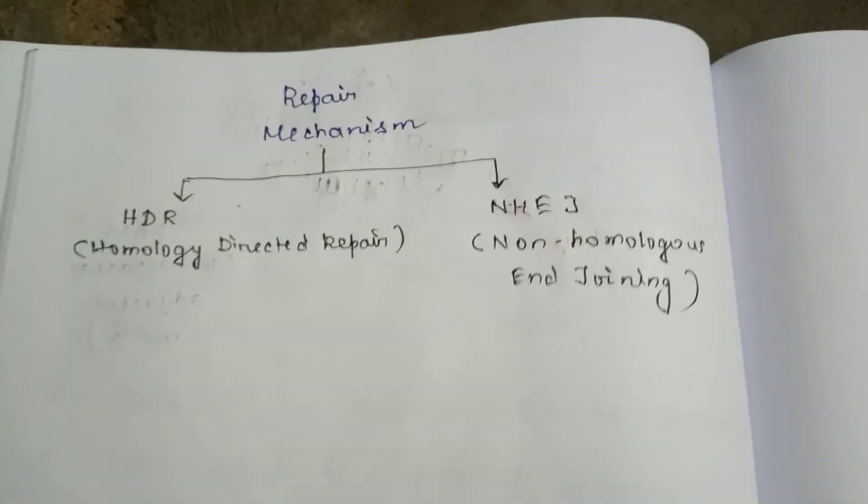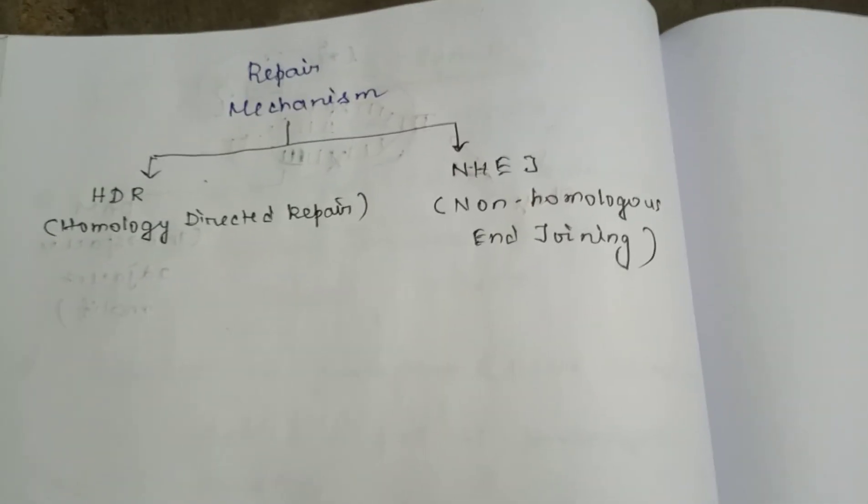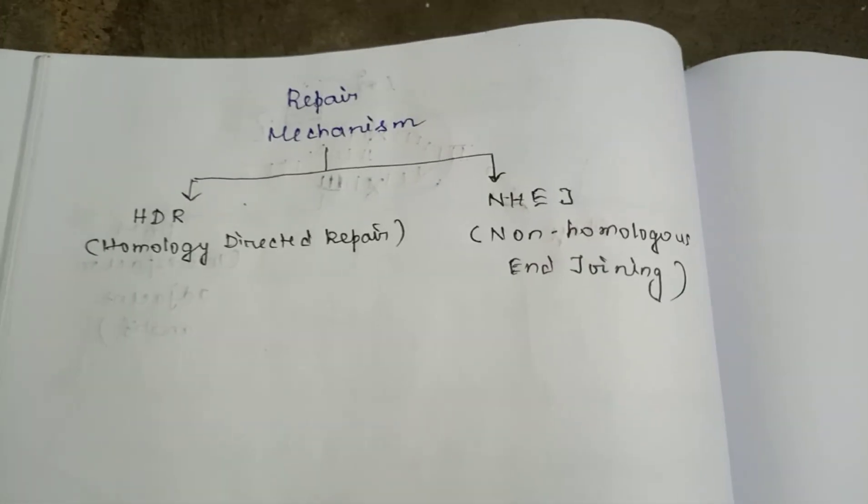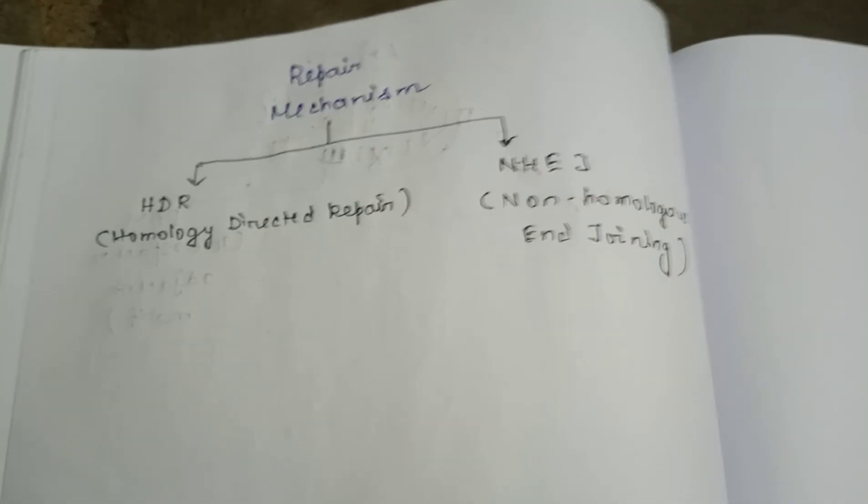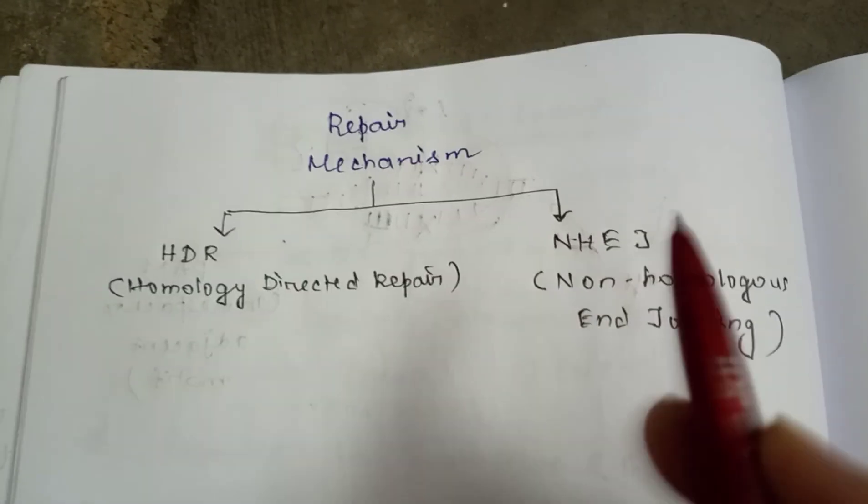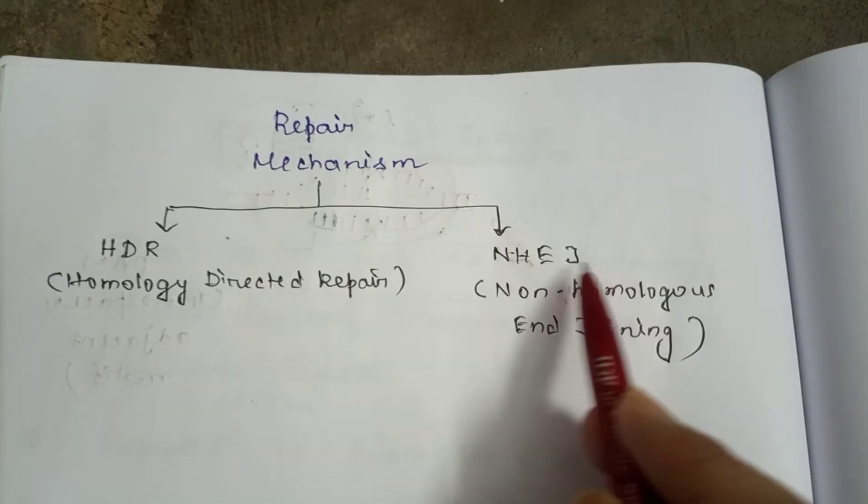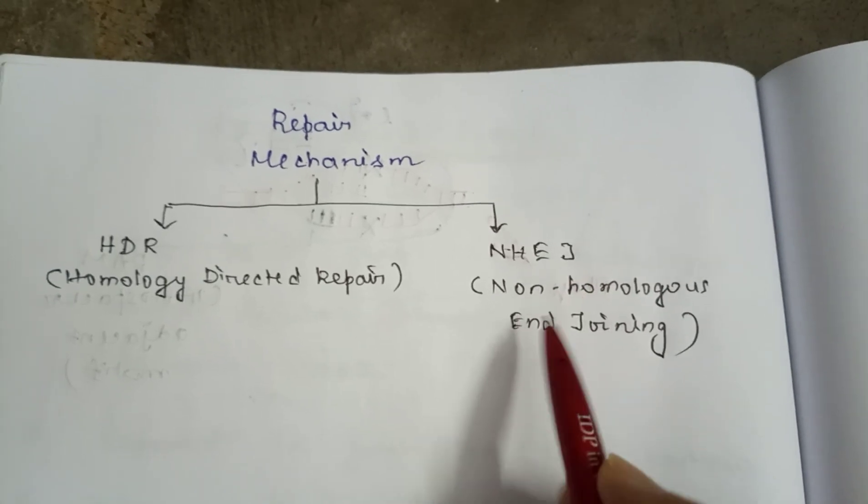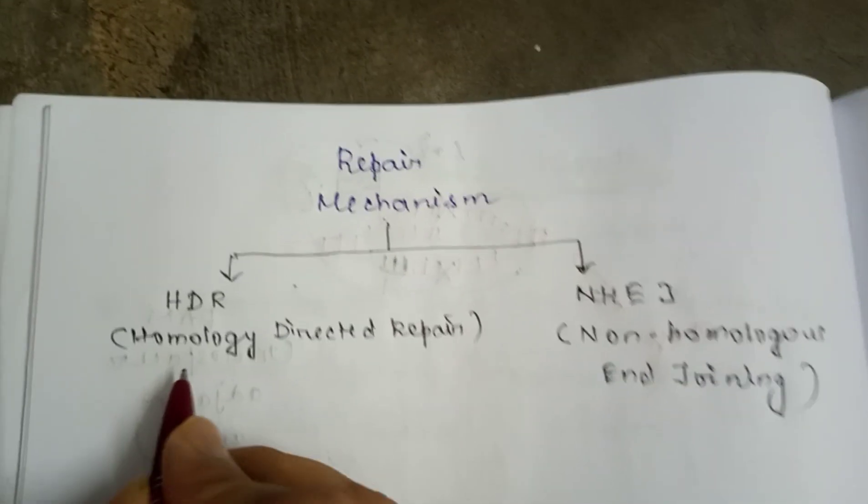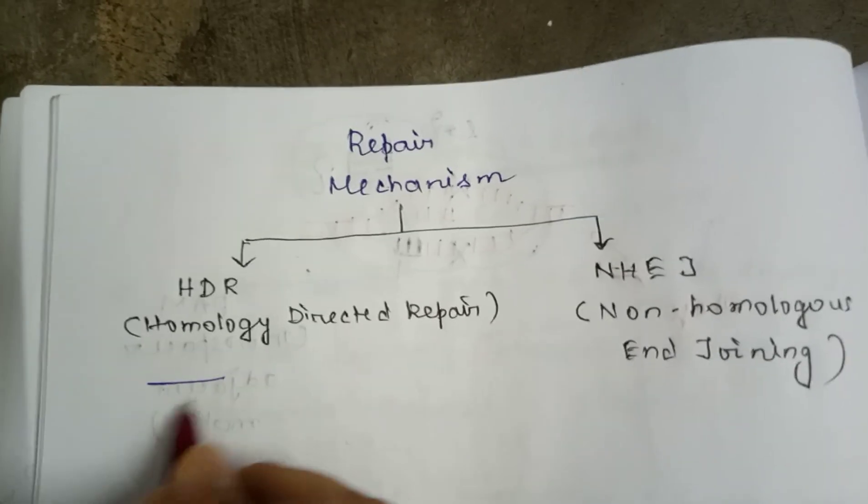After cutting of the DNA, the double strand break by Cas9, there are two types of repair mechanisms that can be initiated. One is HDR or homology directed repair, and another is NHEJ, that is non-homologous end joining.